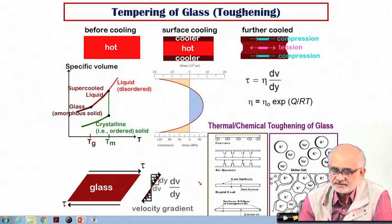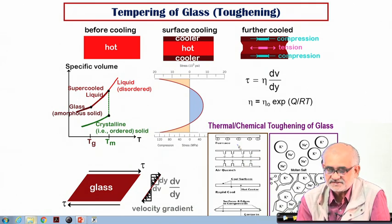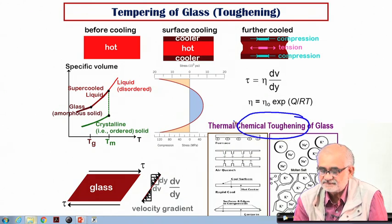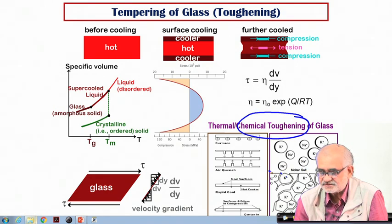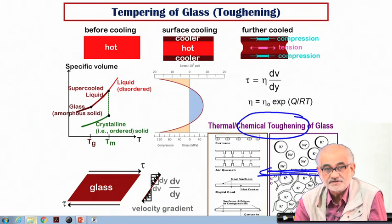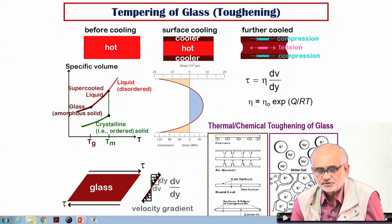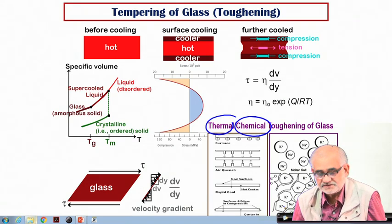We can apply a similar strategy not by thermal treatment but by chemical treatments — this is chemical toughening of glass. By exposing the glass to certain chemicals, chemical reactions occur on the surface, bringing in certain ions. Substitutional reactions form a reactive product layer on the surface with bigger cations, which can also generate residual compressive stresses. Both thermal tempering and chemical tempering of glass can make it more resistant to failure.